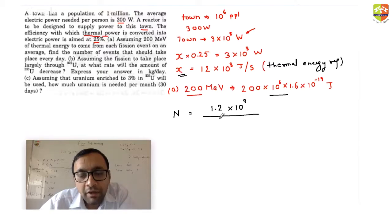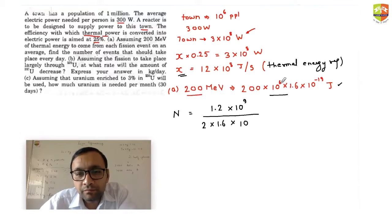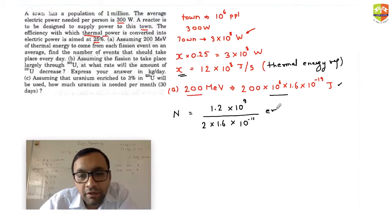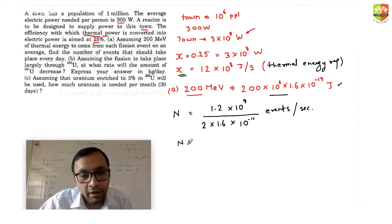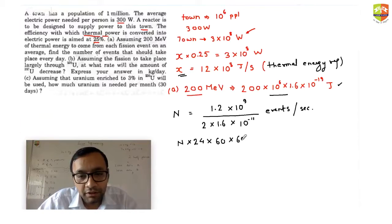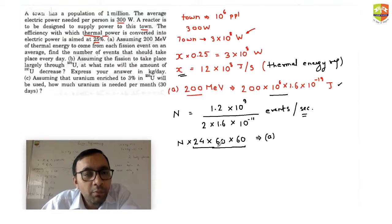N equals 1.2 × 10⁹ divided by 2 × 1.6 × 10⁻¹¹. This gives the number of events per second. To find events per day, multiply N by 24 × 60 × 60 seconds. So N per day equals N × 86400. This is the answer for Part A.